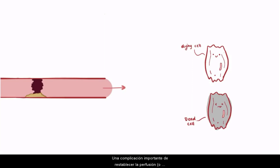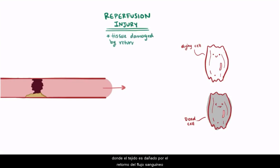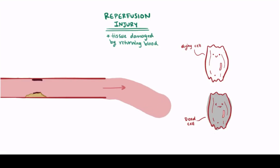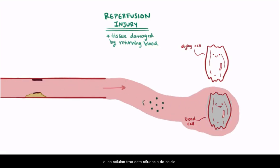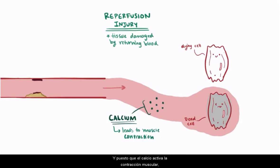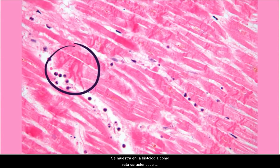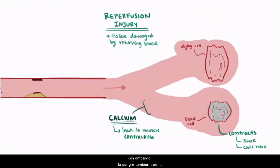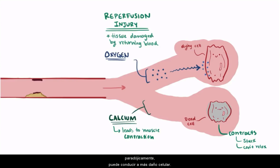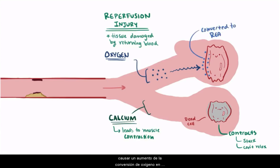An important complication of reestablishing perfusion, or reperfusion therapy, is reperfusion injury — where tissue is damaged by returning blood flow. This is thought to happen because of a couple mechanisms. First, blood flowing back to the cells brings an influx of calcium, and since calcium leads to muscle contraction, the irreversibly damaged cells contract and get stuck — they can't relax. This shows up on histology as characteristic contraction band necrosis. Also, blood brings along oxygen, but that oxygen, paradoxically, can actually lead to more cellular damage. The conditions in an ischemic heart seem to cause an increased conversion of the returning oxygen to reactive oxygen species, which can go on to damage more heart cells.